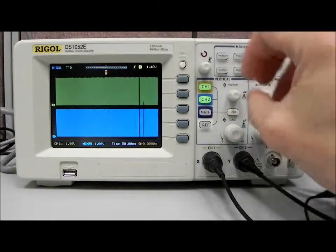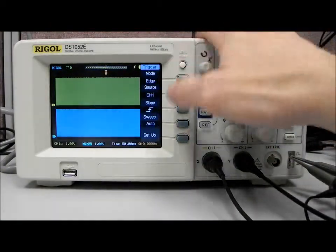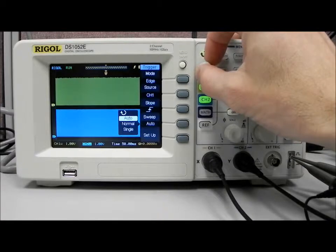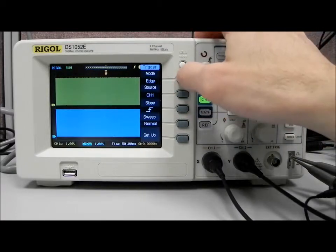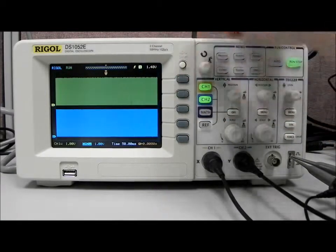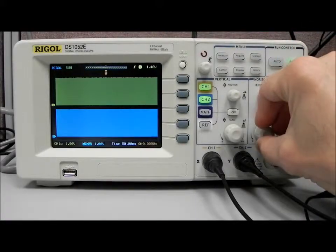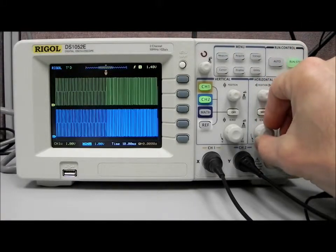And then what we'll do is now in the triggering mode that we're in right now, we're going to go out of auto and go to normal. But we're in edge triggering mode and we're triggering on channel one.